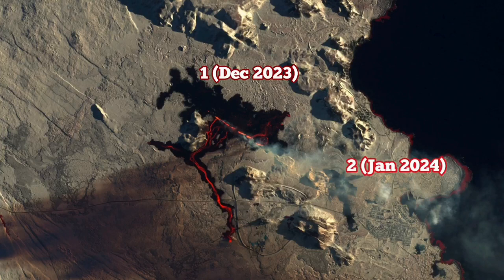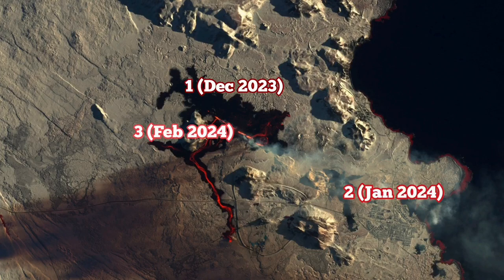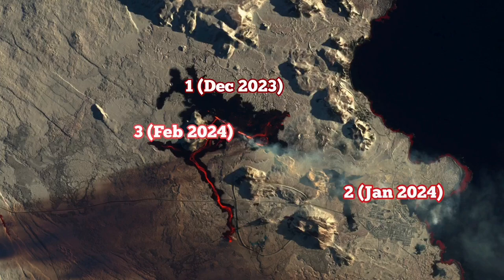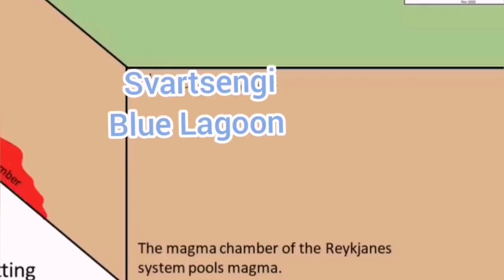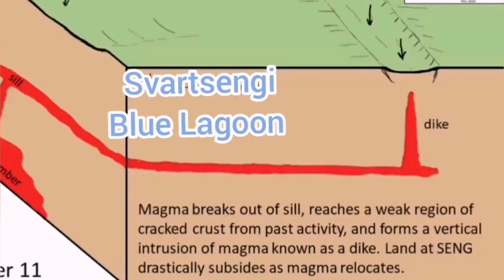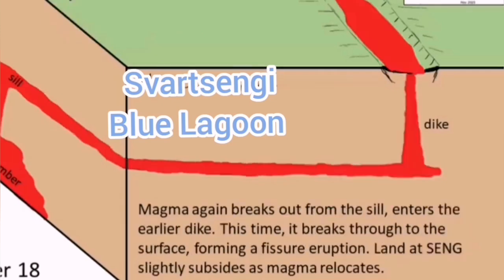We had the first December 2023, second one was in January in the Grindavik area, then we had this February one. I think the other one, there is a possibility it will be towards Grindavik. Based on what we see, the sill will lead to an eruption in that area at that angle.